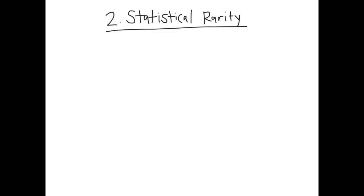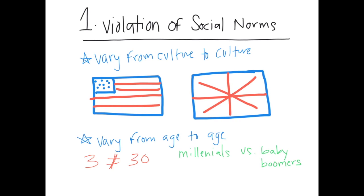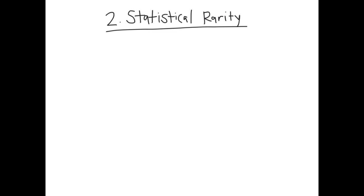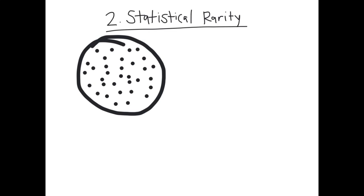The second criterion of assessing abnormal behavior is that it is a statistical rarity. So let's say this circle represents the population as a whole. The black dots represent the majority of the population who are demonstrating the same behavior. And the red dots are demonstrating individuals who have a different behavior that is different from the norm. Under this definition, because they are rare, they are a statistical rarity, the behavior that they're exhibiting would be considered abnormal.